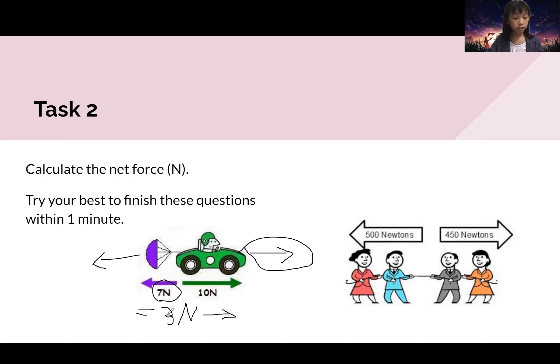So why is it now three newtons, not negative three newtons? It's because of the direction. The direction is going towards the right side, therefore we have to move it to the right side, three newtons.